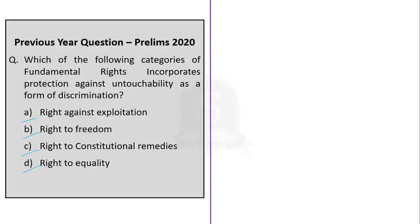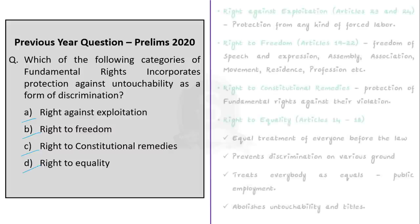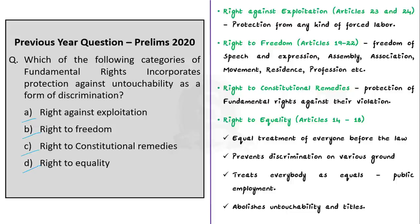Let us briefly see about these rights before arriving at the correct answer. The right against exploitation is enshrined in Articles 23 and 24 of the Indian Constitution. These are fundamental rights that guarantee every citizen protection from any kind of forced labor. Since this is about forced labor and not related to untouchability, this is an incorrect option.